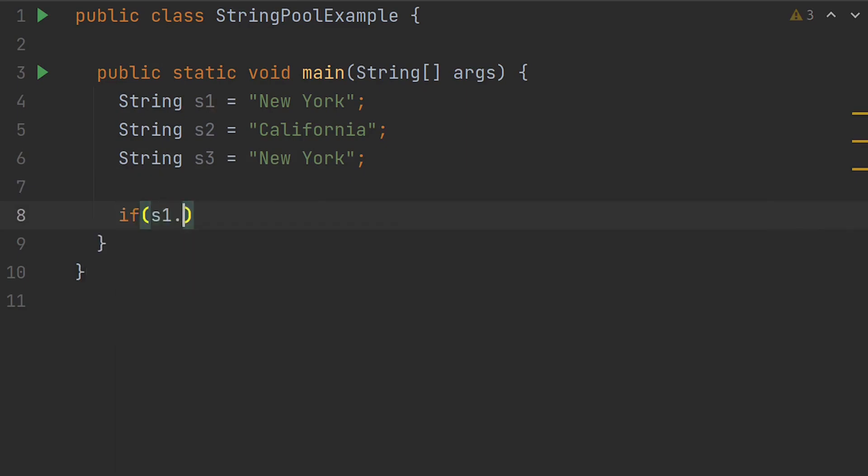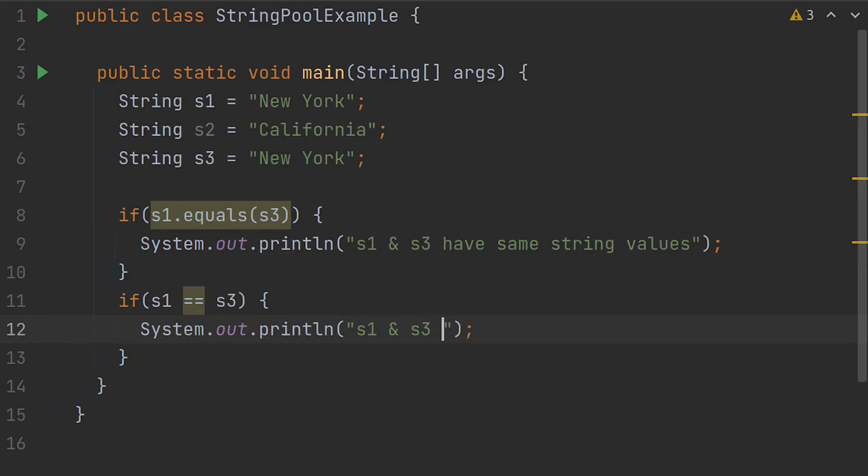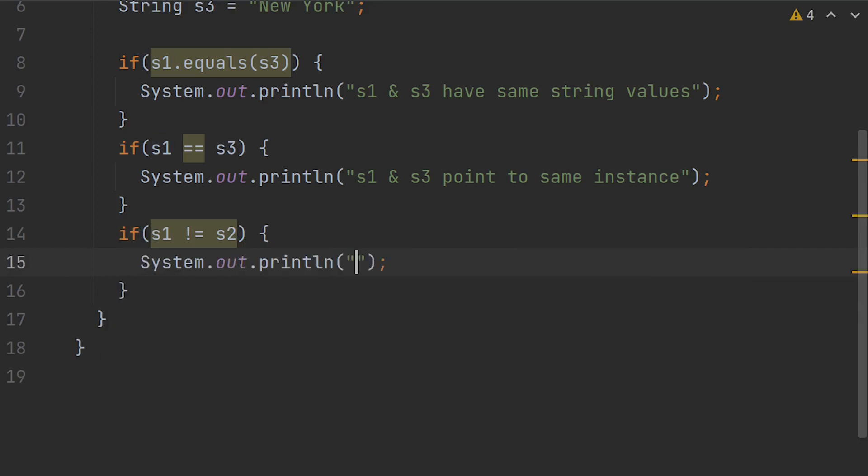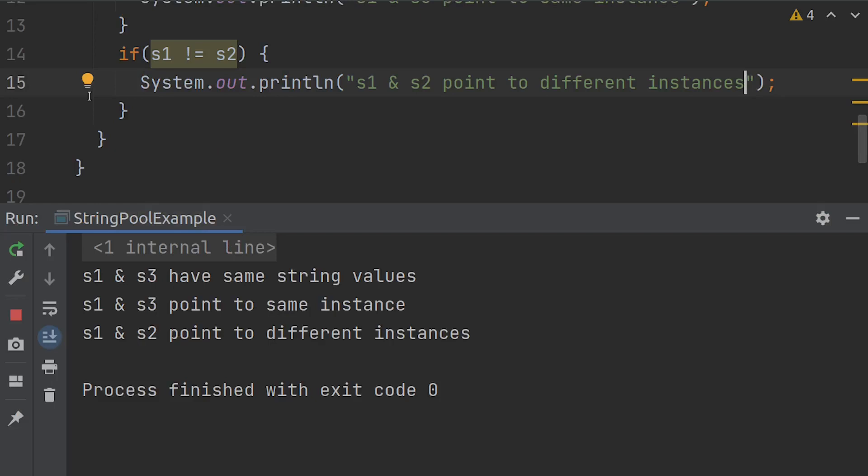Let's see it in code. Say s1 dot equals s3. System.out.println s1 and s3 have same values. S1 equals equals s3. System.out.println s1 and s3 point to same instance. S1 equals equals s2. Then print s1 and s2 point to different instances. Let's run it. Cool, it prints s1 and s3 have same values, and s1 and s3 point to same instance, and s1 and s2 point to different instances.